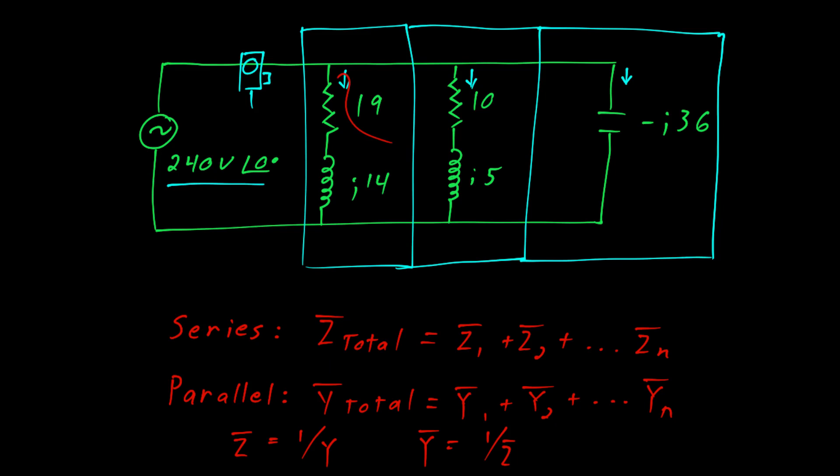For example, if we look at this part here, the first branch is a series circuit. It consists of a resistor in series with an inductor. Likewise, the second branch is a series circuit. We would add the individual impedances. So for the second branch the impedance is 10 plus j5.